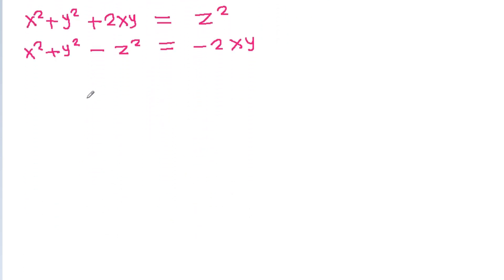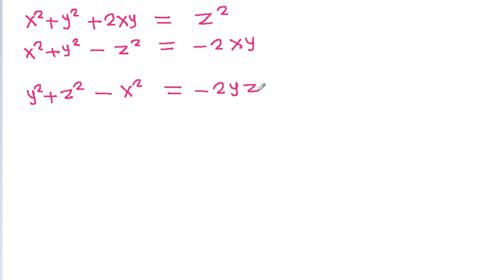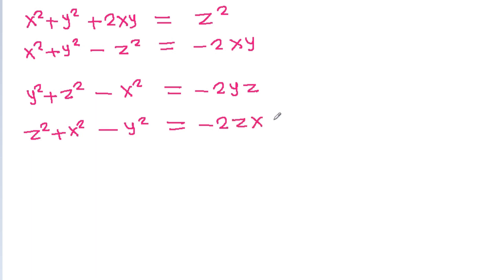In the same way, we can get y square plus z square minus x square is equal to minus 2yz, and z square plus x square minus y square is equal to minus 2zx.